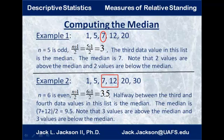Let's look at an example. In the first example we have five data values, already in order: 1, 5, 7, 12, and 20. The value 7 is in the middle. n is 5, so n plus 1 over 2 is 3 — it's the third data value from the bottom and also the third from the top. That's the median: 7. Notice there are 2 values above it and 2 below it — half the data is above, half is below, not counting the median itself.